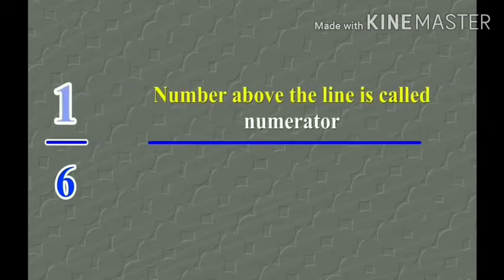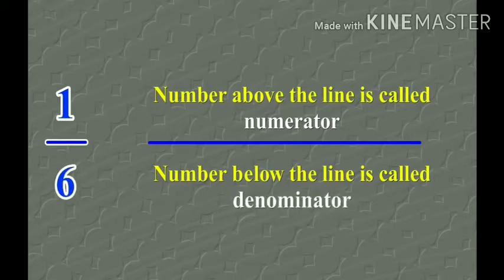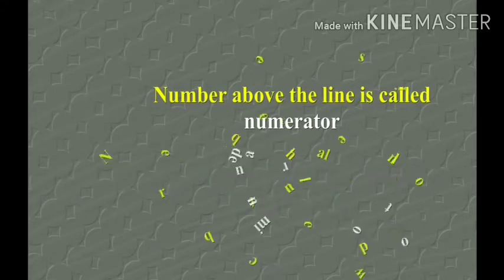The number above the line is called the numerator, and the number below the line is called the denominator. So here, six is the denominator and one is the numerator.